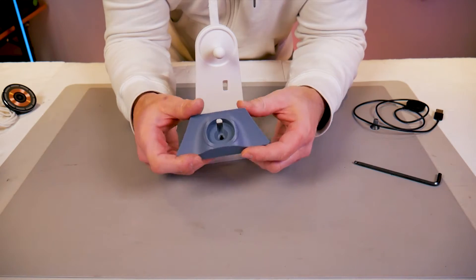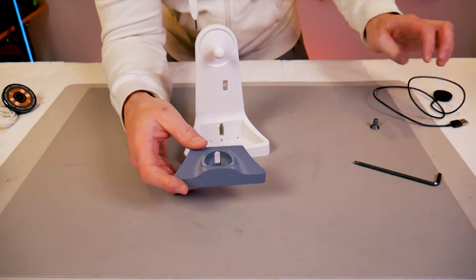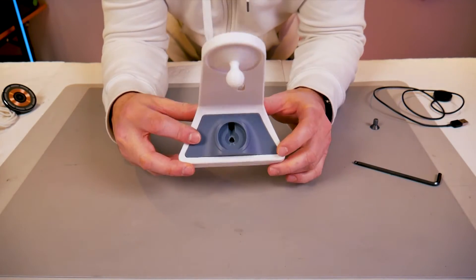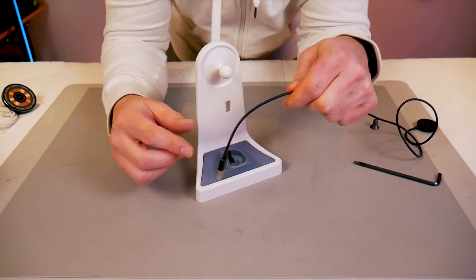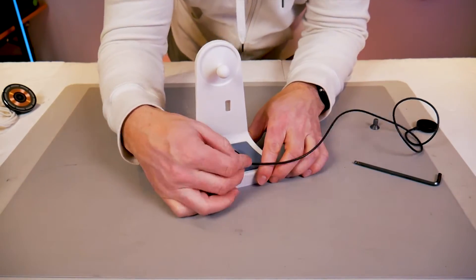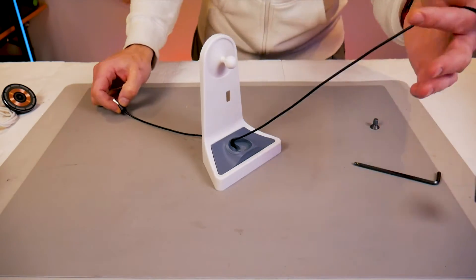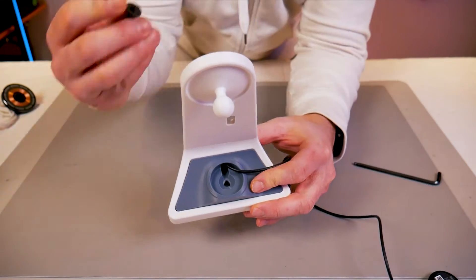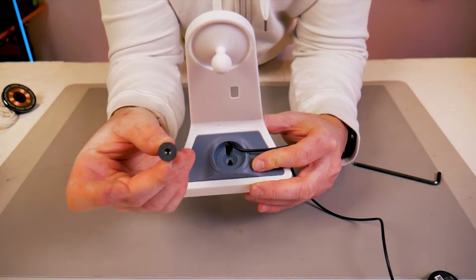Alternatively you can print the smartwatch charger holders and this one here is for the Samsung Galaxy series and in the downloadable files I also have one for the Apple watches. First you put the charger holder into the main body and then you can fish the USB-A size cable through the hole in the back.